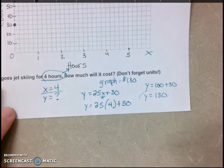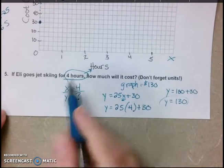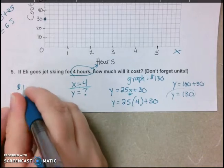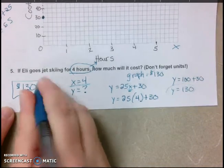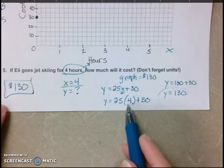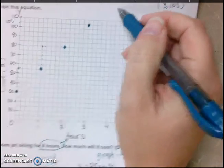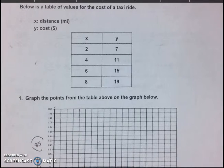So you can use the graph, you can use the equation, you can just think about it in your head, 4 times 25 plus the 30. There's a few different ways to get that. But you can always check. What I would do is I would check with the equation, and check and make sure that's going to be in line with my graph. And that helps me know that I did it correctly.